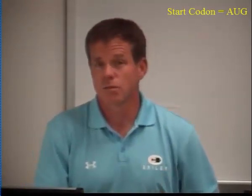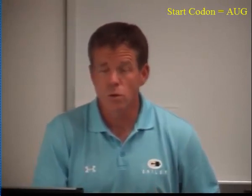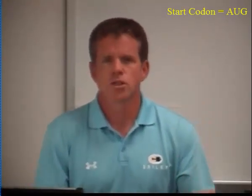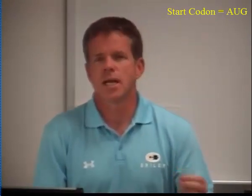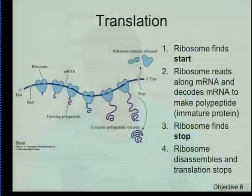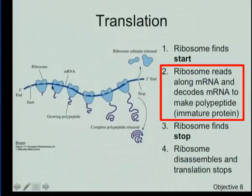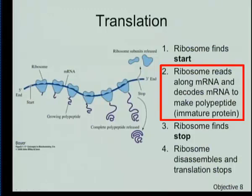The start codon tells you where to start, and that start codon has the sequence AUG. On our messenger RNA strand, we have a start codon, and that's where the ribosome will be assembled. As the ribosome moves down that messenger RNA strand, it's reading the bases three at a time. It reads three, puts in the appropriate amino acid; reads three more, puts in the appropriate amino acid. For every three nucleotides, we get one amino acid of a particular type, depending on what those instructions say.